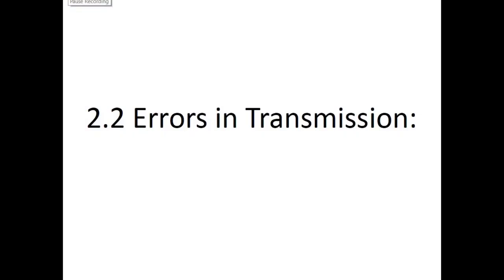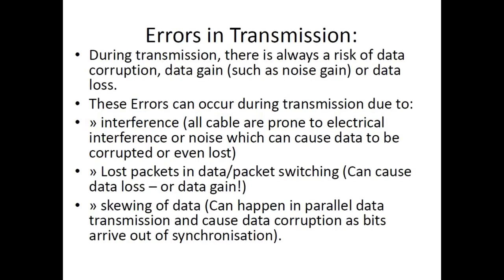Welcome to another computer science lecture. Today we would be discussing Section 2.2: Errors in Data Transmission, or errors in data communication. During transmission there is always a risk of data corruption, data gain, or data loss.